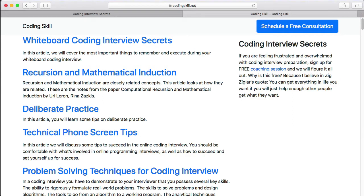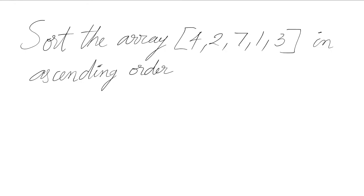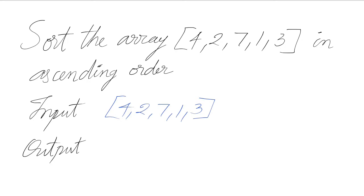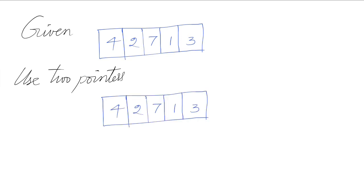This video is sponsored by codingskill.net. Let's work through the bubble sort algorithm. We want to sort the array [4, 2, 7, 1, 3] in ascending order. The input is [4, 2, 7, 1, 3] and the output is the elements in ascending order. We are given this unsorted list and we can use two pointers, pointing to the first two elements in the list.